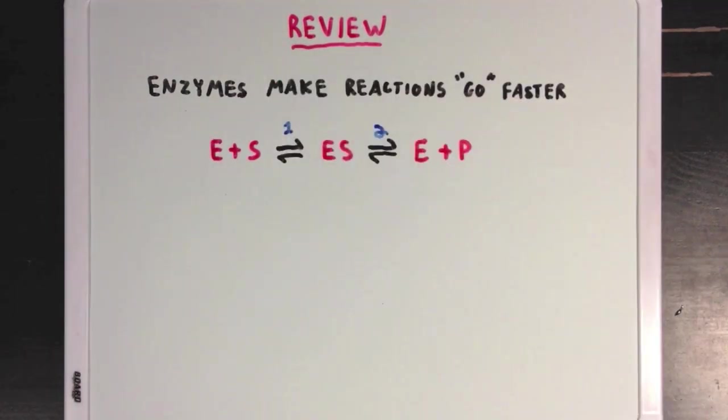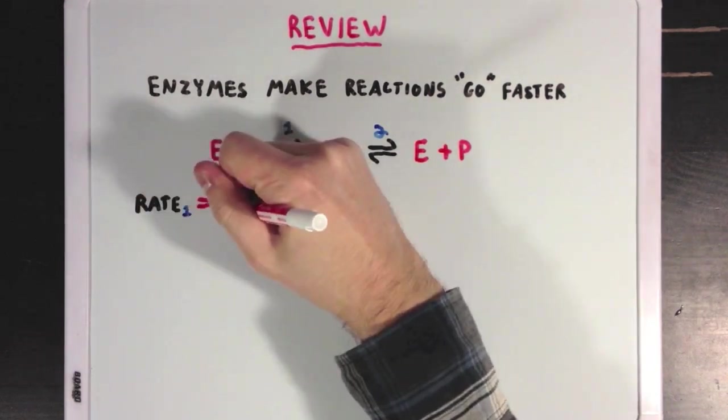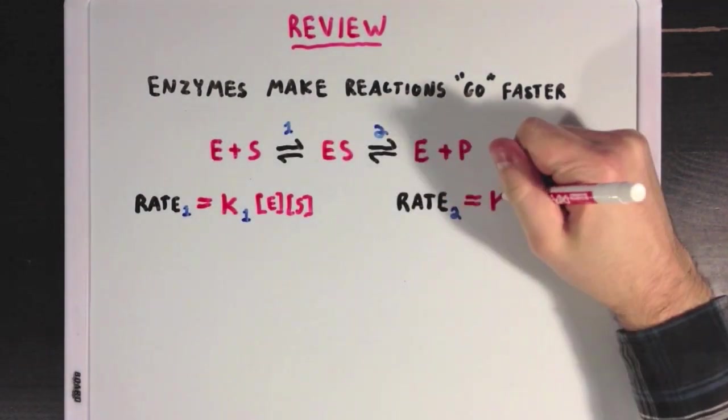First, the binding of enzyme to substrate, and second, the formation of products. And each of these reactions has its own rate.